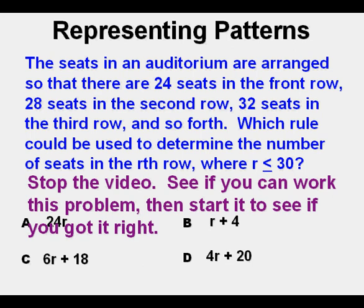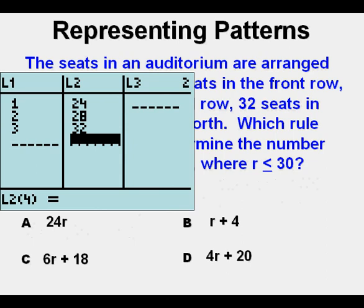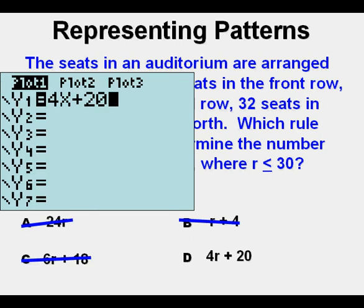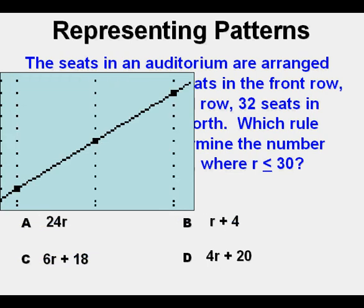Okay, here are the points entered under L1 and L2. Here are the points that are graphed. We've entered A, B, and C, and none of them were right. So we enter choice D, which is 4x plus 20. We graph that and it is right, hits all the points. So D is our correct answer.